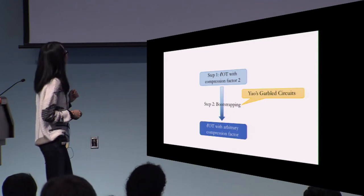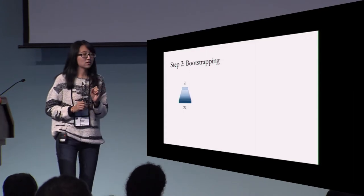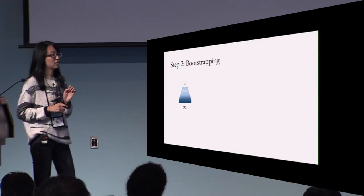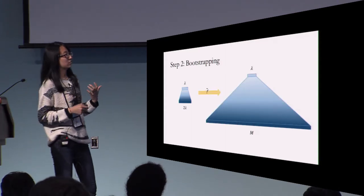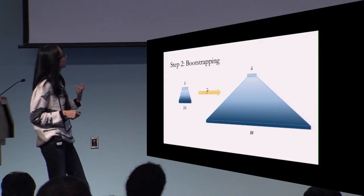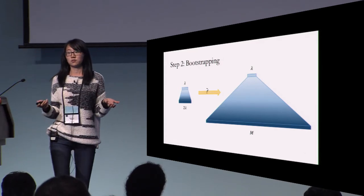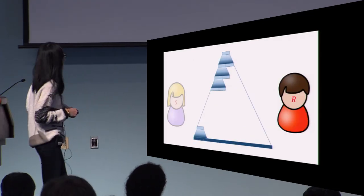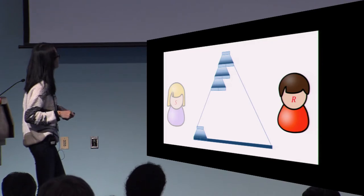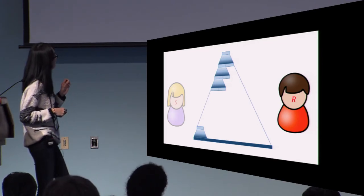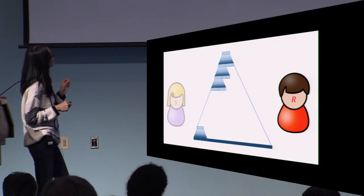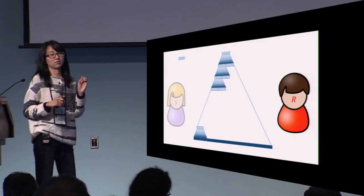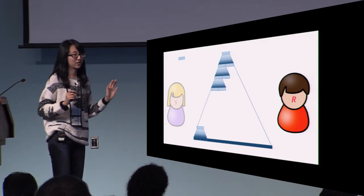The bootstrapping theorem says: as long as you get laconic OT with just compression factor two, you're done. The idea is: if you have a hash function which can compress 2λ bits to λ bits, and you want to construct a hash function that can compress an arbitrarily long string into a λ-bit string, you use a Merkle tree. The root of this hash tree will be the first message of laconic OT.